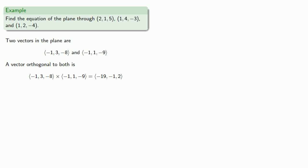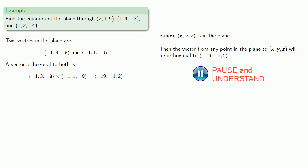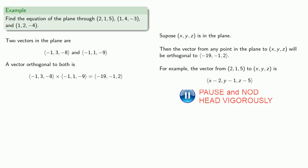Now let's think about this. Suppose I have a point (x, y, z) in the plane. Then the vector from any point in the plane to (x, y, z) will be orthogonal to this normal vector (-19, -1, 2). For example, the vector from (2, 1, 5) to (x, y, z) is (x-2, y-1, z-5). And since this is orthogonal to (-19, -1, 2), then the dot product of the two vectors will be 0.